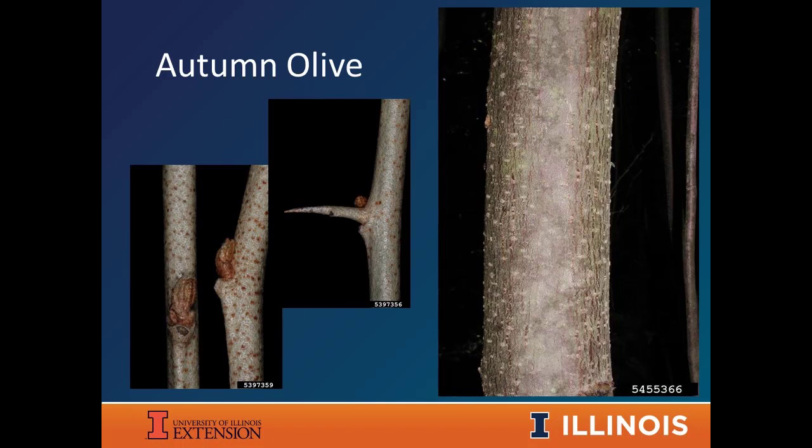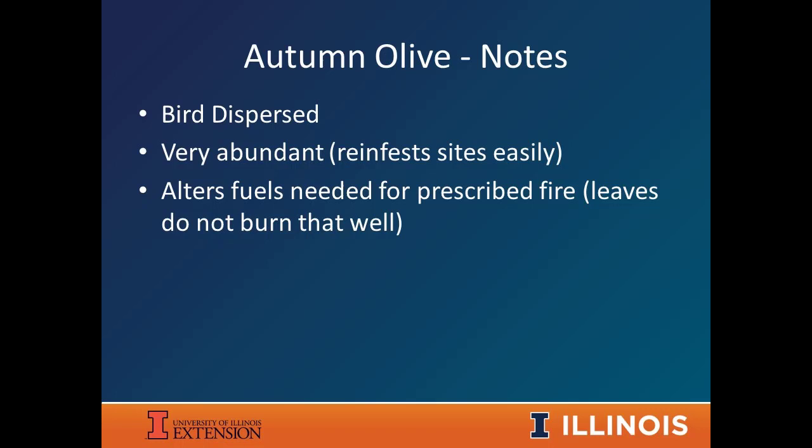Autumn olive does have some spines — some plants do and some don't — and the twigs have little dots on them, making it easy to identify even in winter. It's bird-dispersed, reinfests sites easily, and can grow just about anywhere given its ability to handle really poor soil.